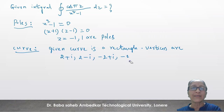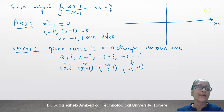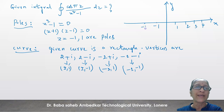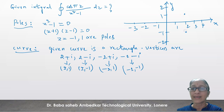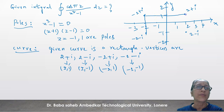On the coordinate axes: plotting the points (2,1), (2,−1), (−2,1), (−2,−1). When you join all these points you get the rectangle. Our poles z = −1 and z = 1 both lie inside this rectangle.